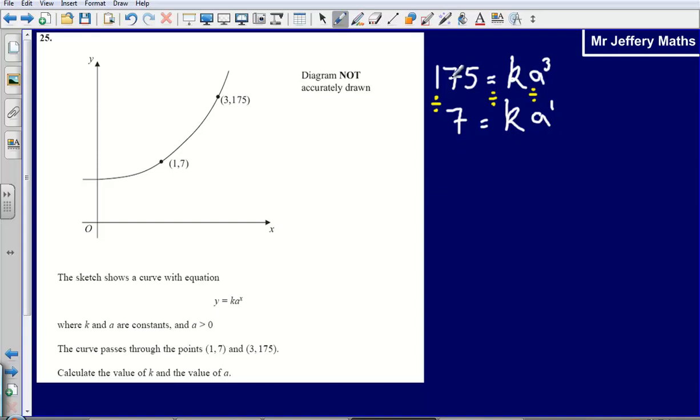Well I would get 175 divided by 7 which is going to give me 25, and then k divided by k, that's just going to give me 1. And then a cubed divided by a, well I'm left with 1a squared. Now remember I don't really need that 1, so I'm left with just 25 is equal to a squared.